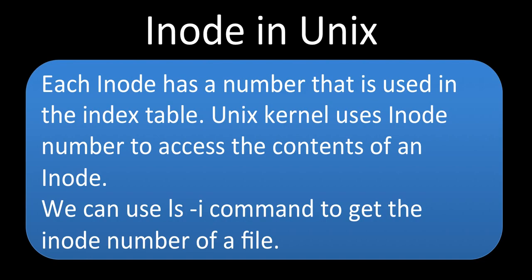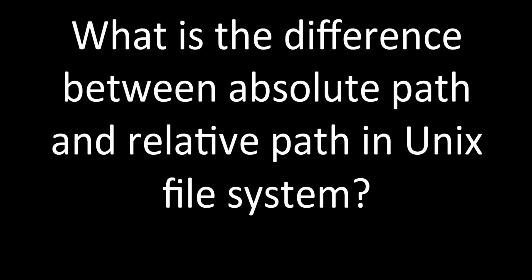In UNIX, we can use the `ls -i` command to get the inode number of a file. If you use the `-i` flag, we get the inode number; otherwise it is hidden from us. We don't normally use the inode number in our day-to-day work, so the inode is used internally by the UNIX kernel as an internal concept.